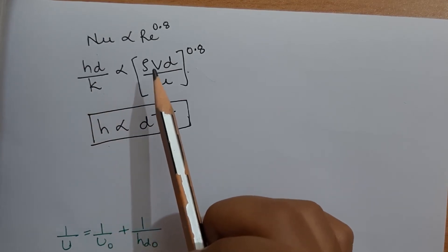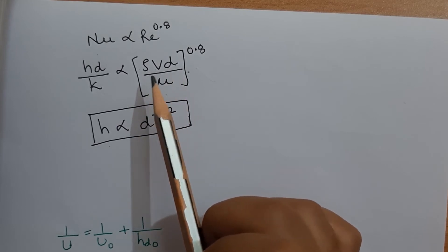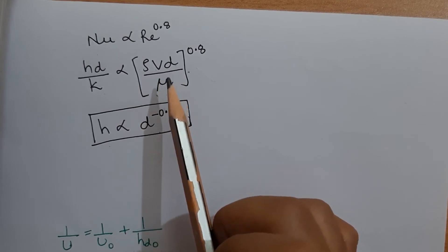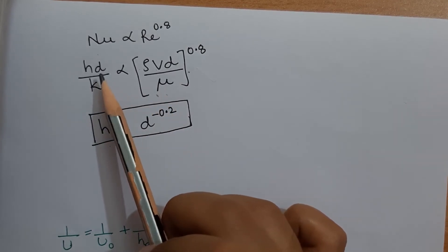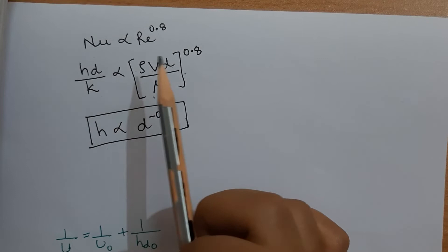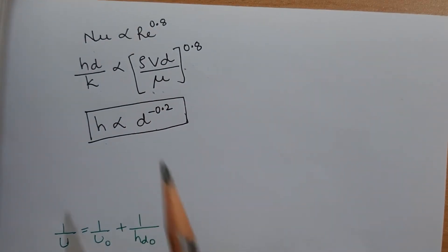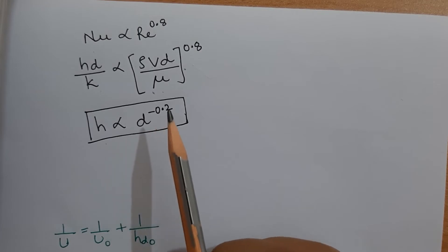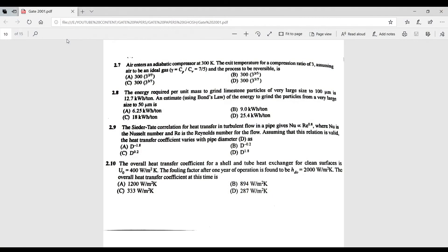Expanding Nusselt number as hd/k and Reynolds number as ρvd/μ, and taking d to the RHS, we find that the heat transfer coefficient h varies as d^(−0.2).